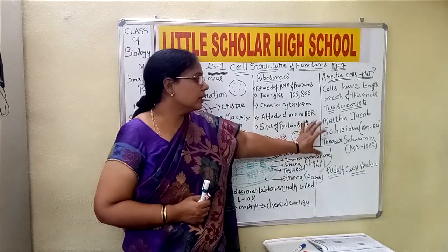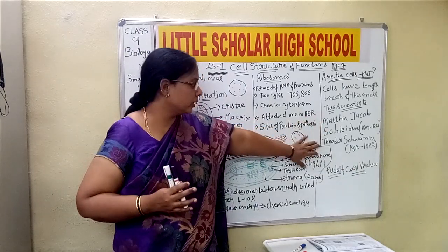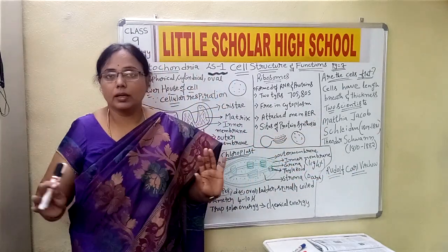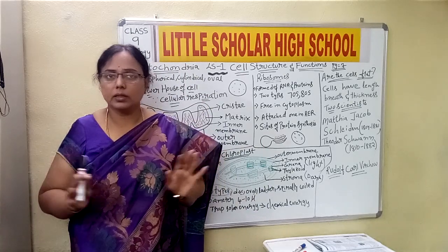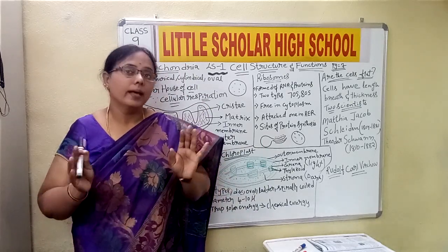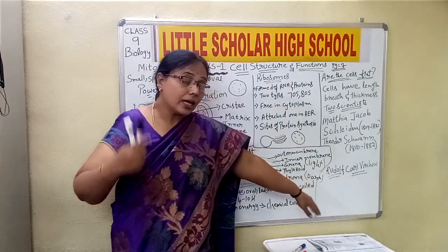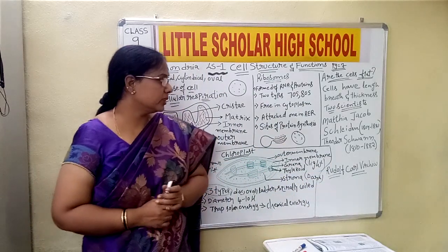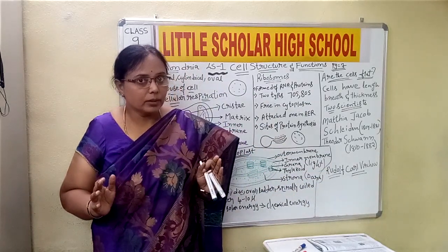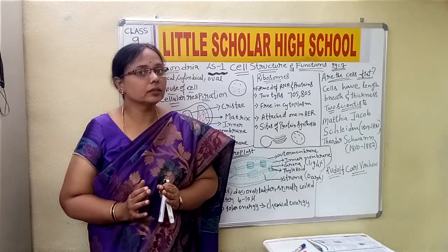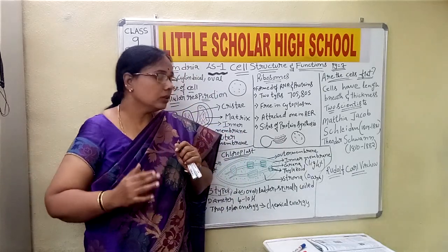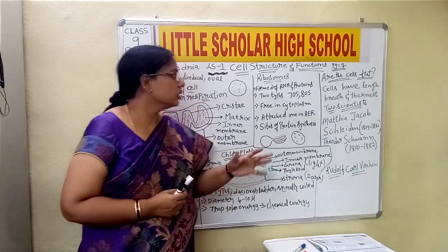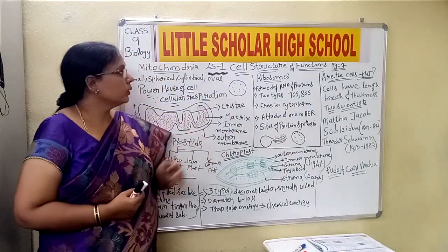Virchow modified the theory proposed by Schleiden and Schwann, and finally stated that all organisms belonging to the plant and animal kingdoms are made up of cells, they contain a nucleus, and all new cells arise from pre-existing cells. So we say all organisms are made up of cells and their products.